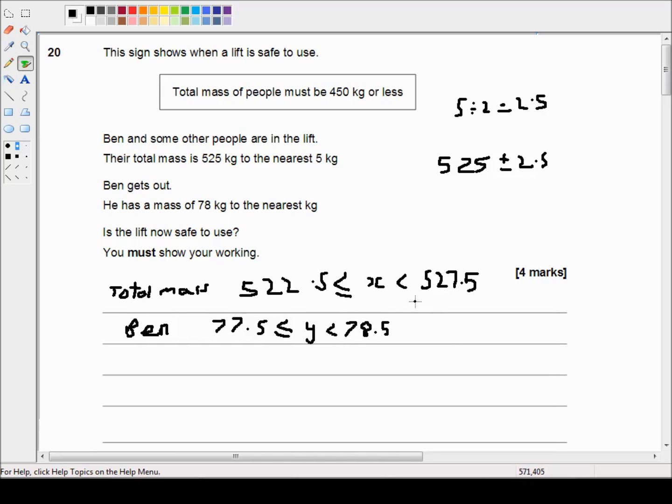So if we subtract the total mass of all the people in the lift from the total mass of Ben... So we're looking at subtracting the maximum amount that the people weigh from the minimum amount that Ben could weigh. And that would give us the maximum possible mass of everybody else.